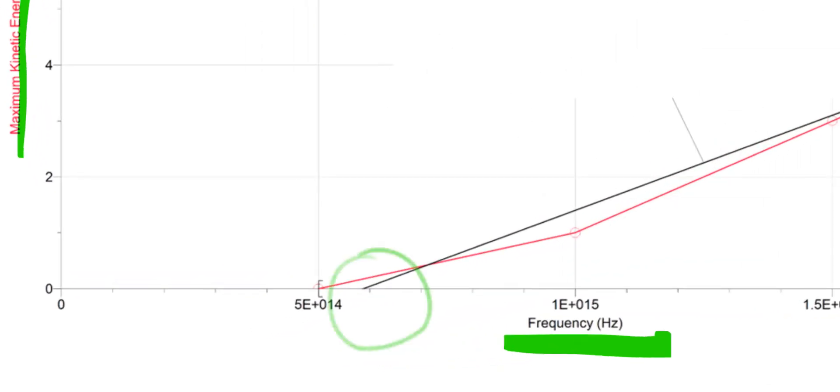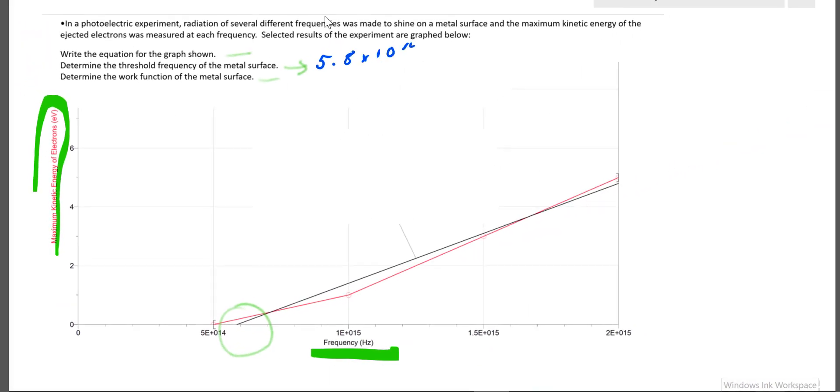Threshold frequency is easy. It's just the threshold where you start actually making electrons. So the kinetic energy is greater than zero, so it's where the line crosses the zero axis. So around this graph, it's around 5.98 or 5.8 times 10 to the 14th Hertz. So I can go ahead and write that information down at the top. 5.8 times 10 to the 14th Hertz.